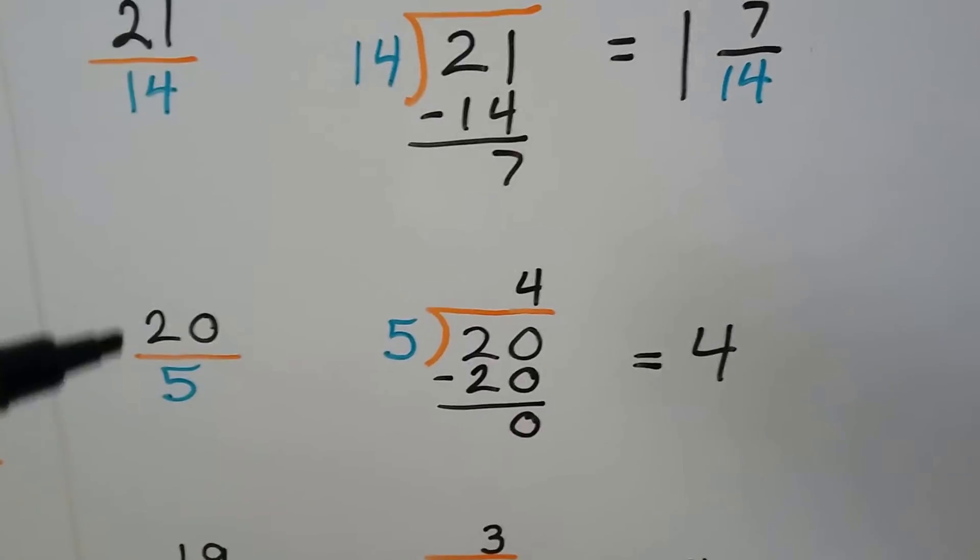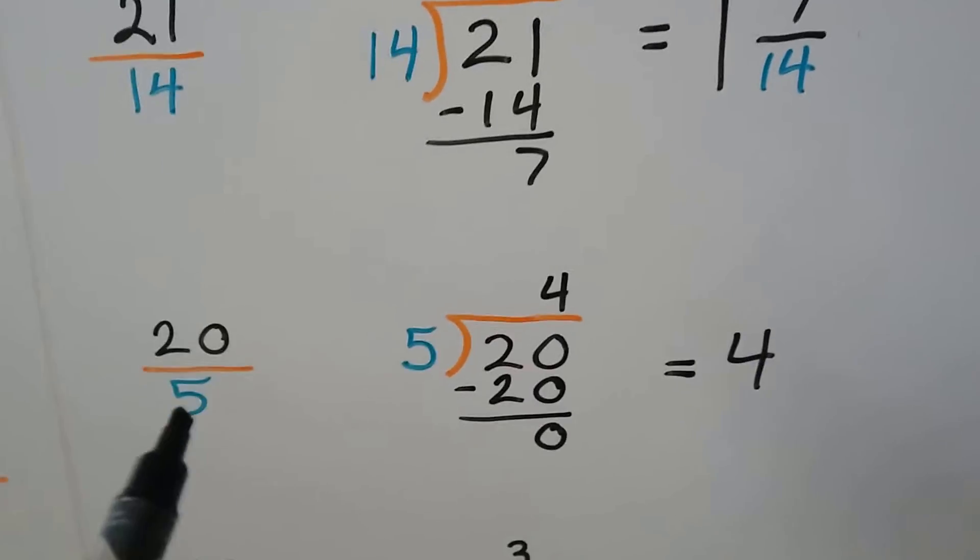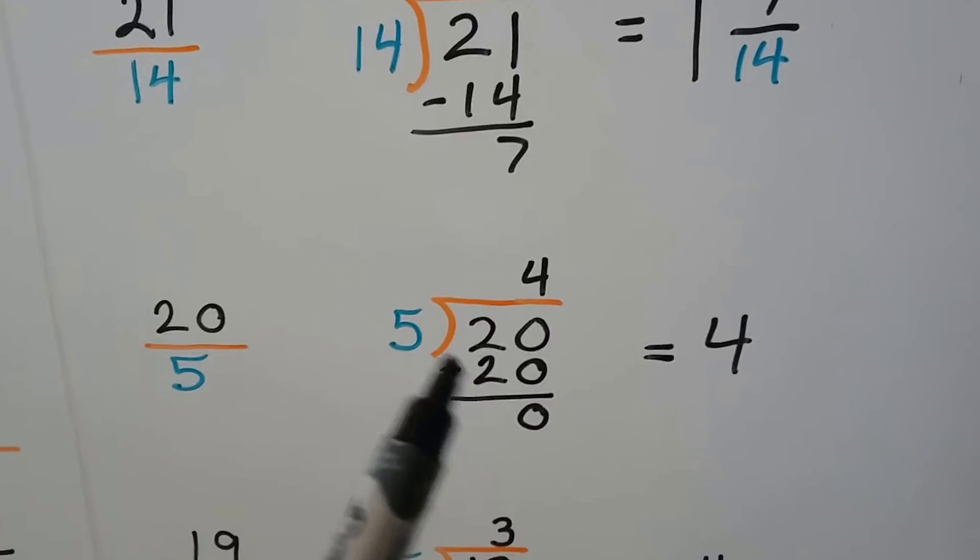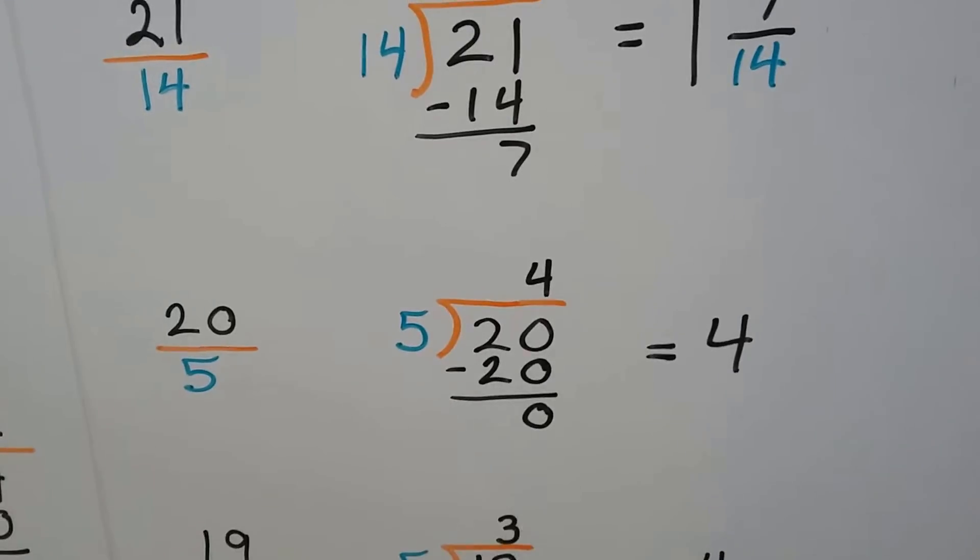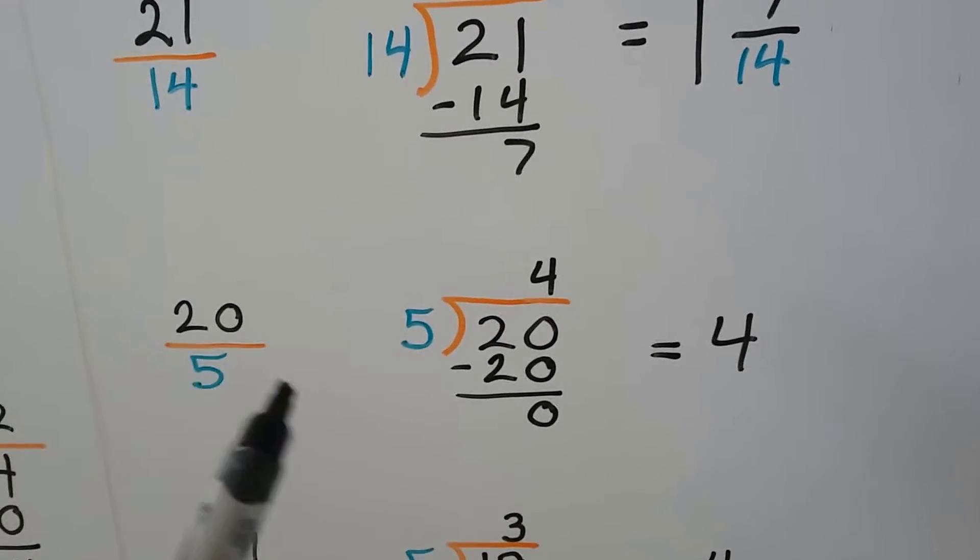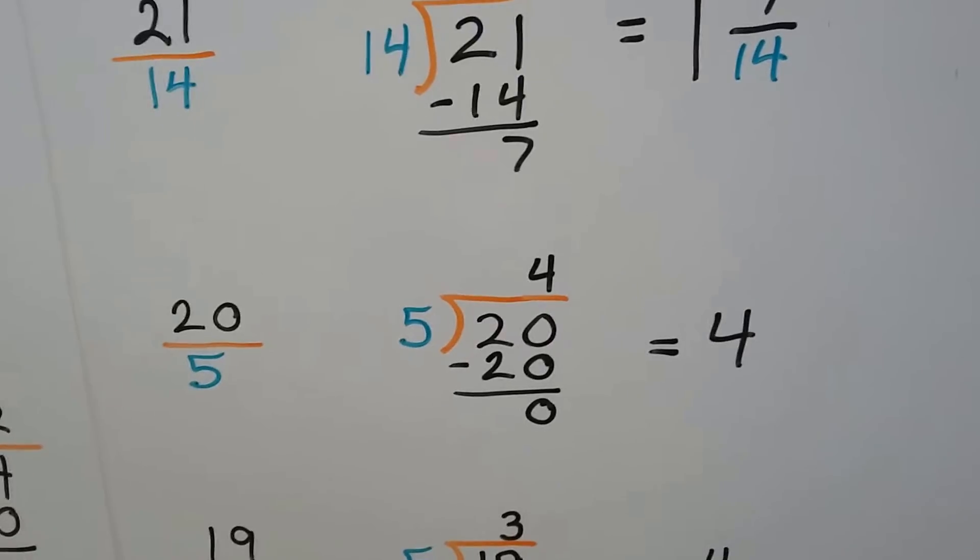Let's do it again. We have 20 fifths. 20 divided by 5. How many times can 5 fit into 20? 4. There's no remainder so the answer is 4. 20 fifths is equal to 4.